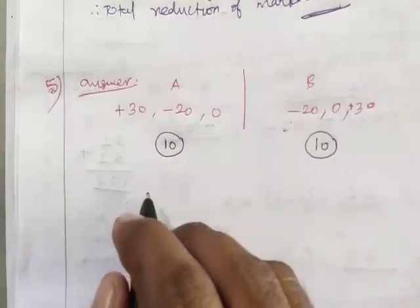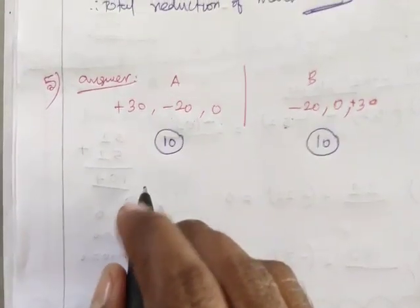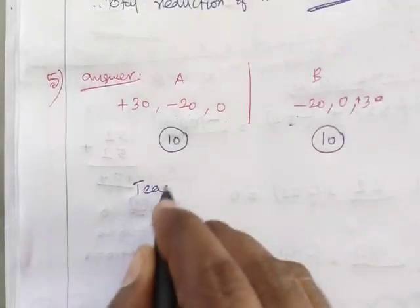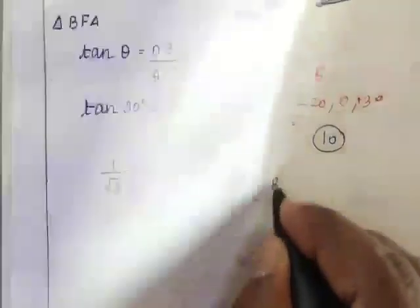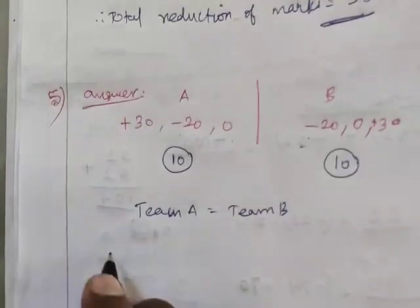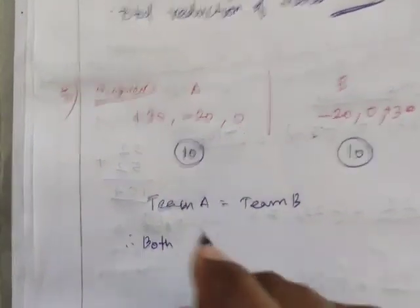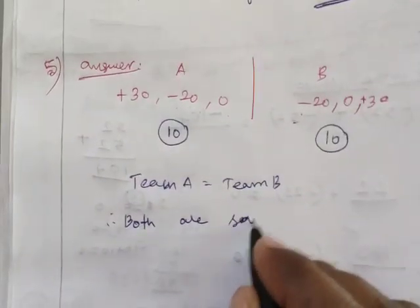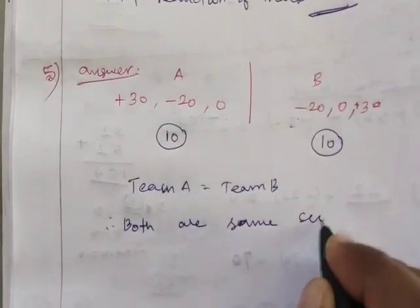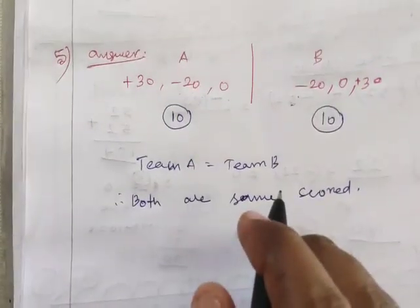Who will win? Team A is equal to team B, therefore both are the same score. Both are the same score.